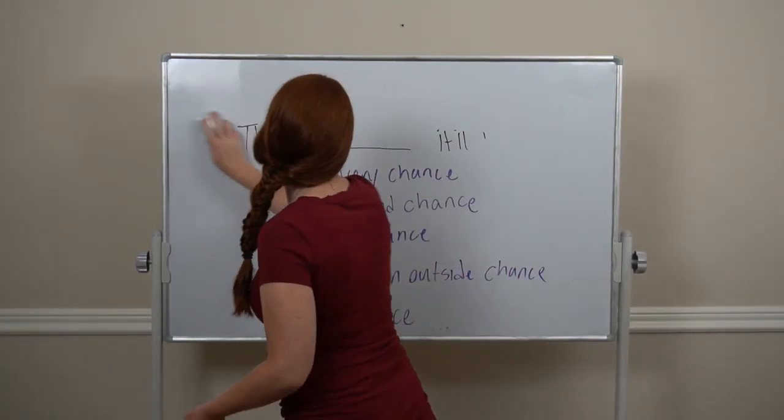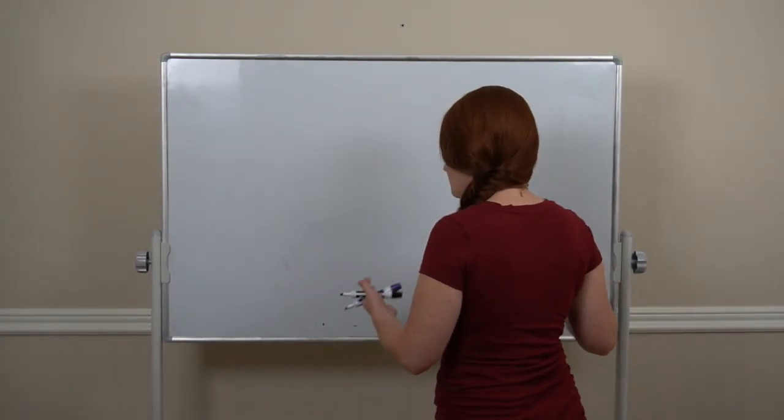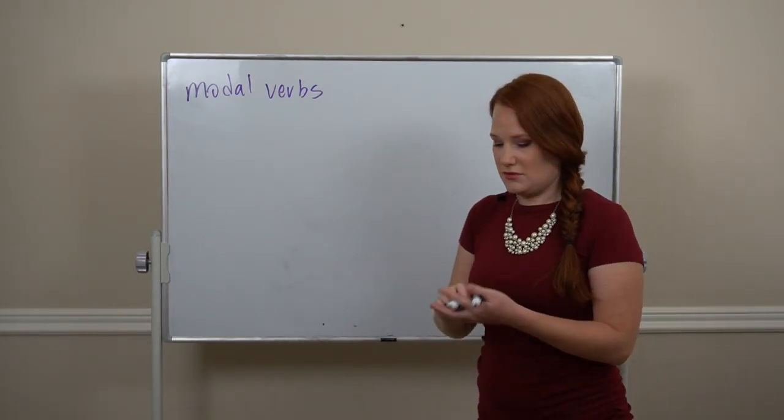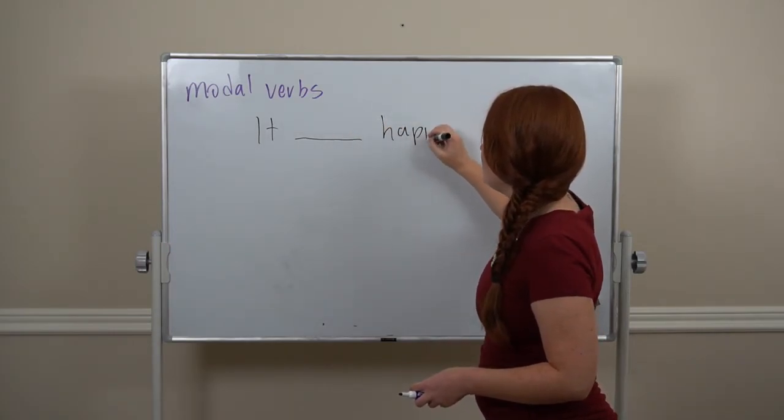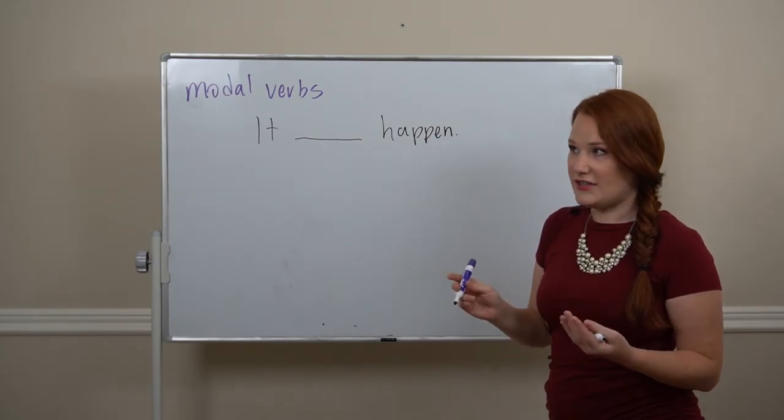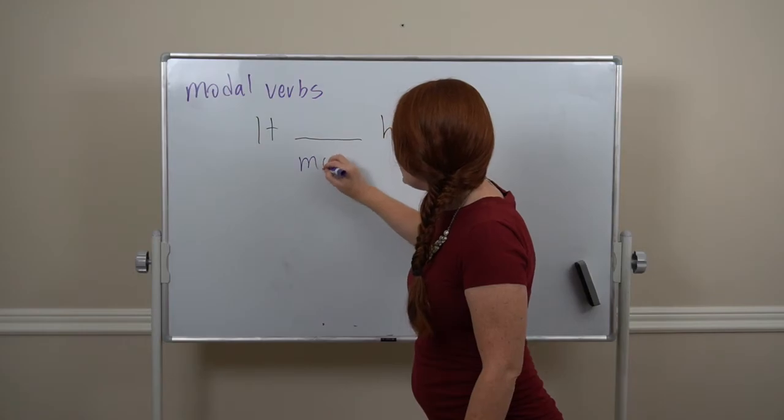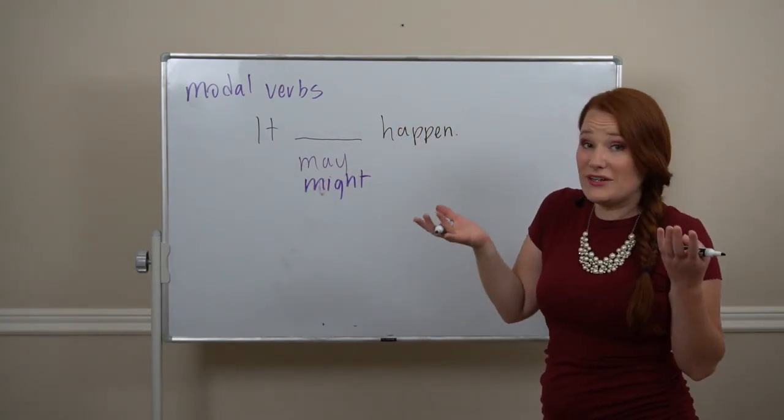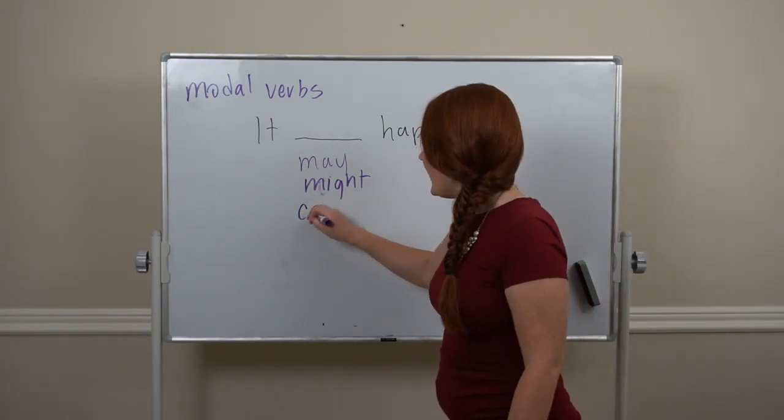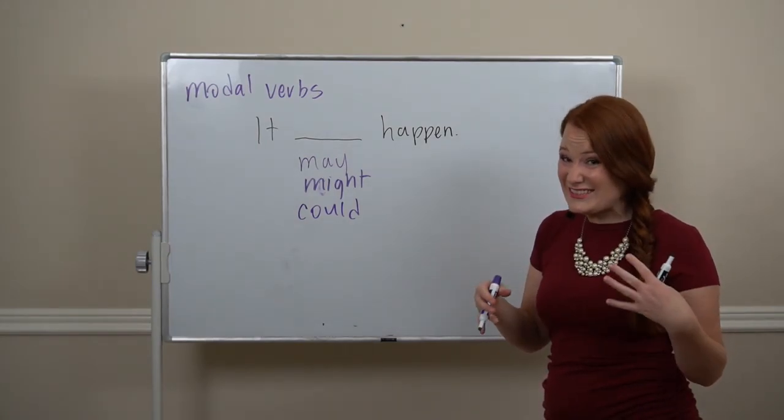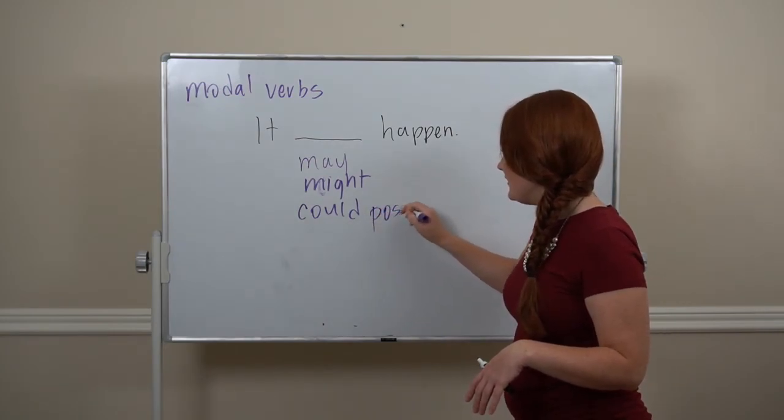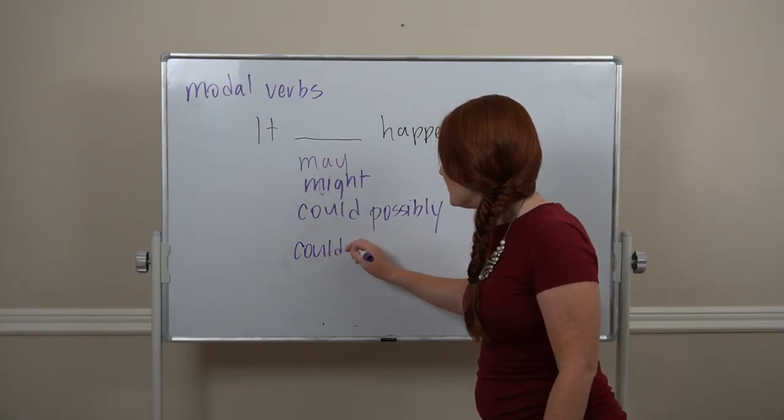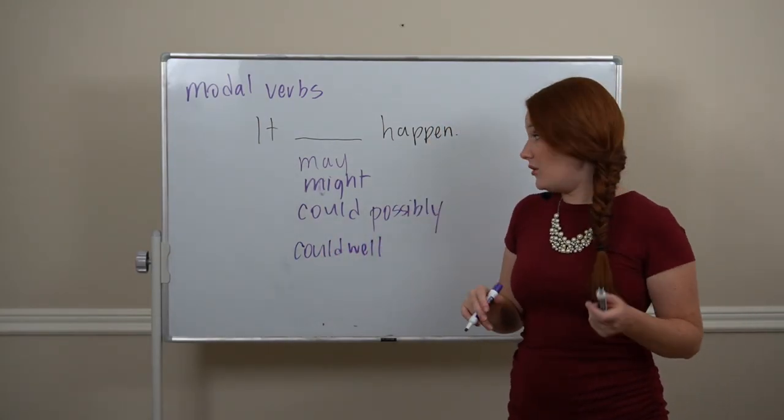We have some modal verbs we can use for this same purpose. For the future, with our main verb happen, we can decide how confident we are with this one. So may or might. May happen, might happen. We don't know. These two are about even. It could happen. A little bit less likely. It's possible. But I don't know. Or it could possibly happen, to add a little bit more emphasis on could. Or it could well happen. It's a possibility. We just don't know. It could well happen.